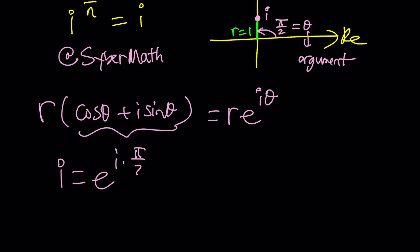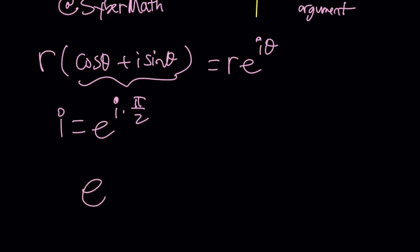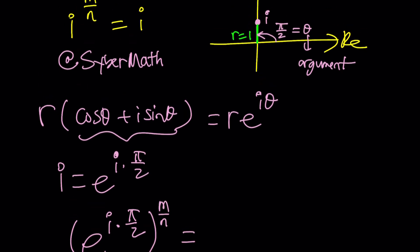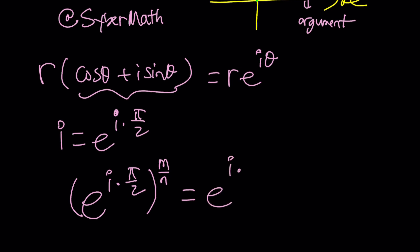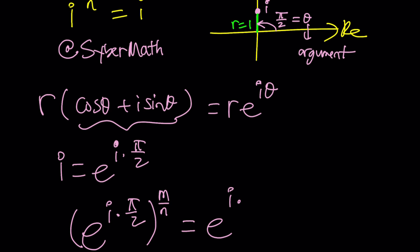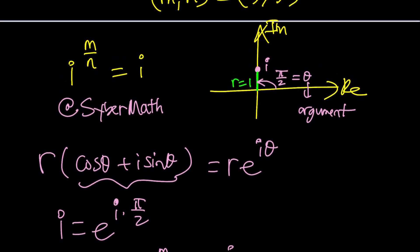Can we just replace i with that? Sure. e to the power i pi over 2, and then you're going to raise it to the power m over n, and that equals i. Here's one thing though: not only pi over 2 will be the argument, because if you add 2 pi to it, which is pi over 2 plus 2 pi, or you can write it as 5 pi over 2, or in general you can add multiples of 2 pi, and k is an integer.